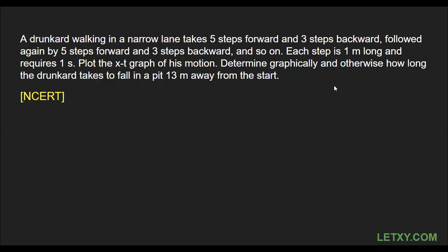The time taken for each step is one second, and the distance between each step is one meter. It's a little complicated in language but it's actually an easy question. The drunkard takes five steps forward and then comes back three steps, so the resultant is actually two steps. We are going to find out the total steps covered by the drunkard in each time interval.